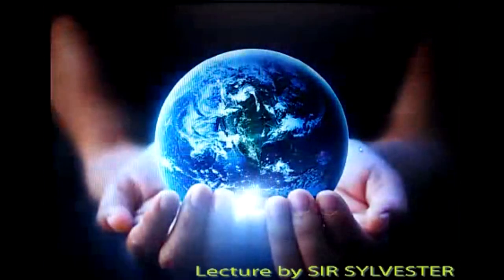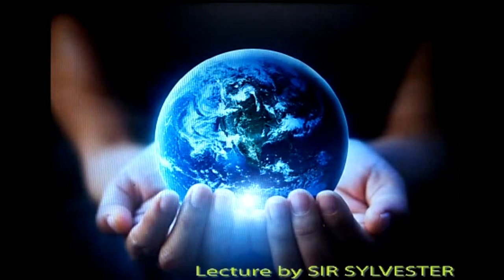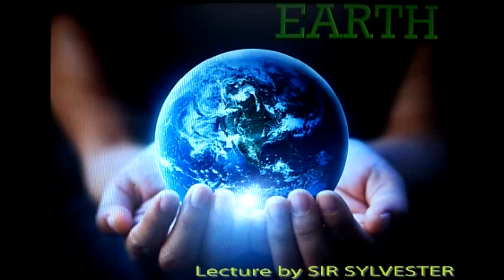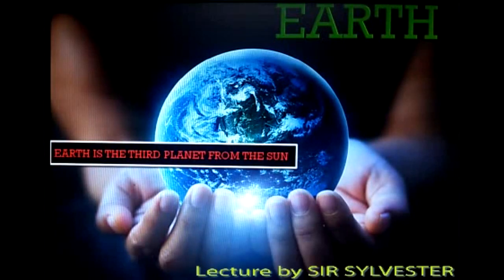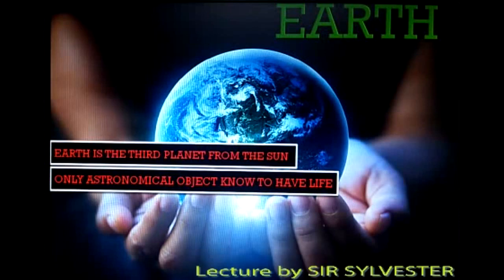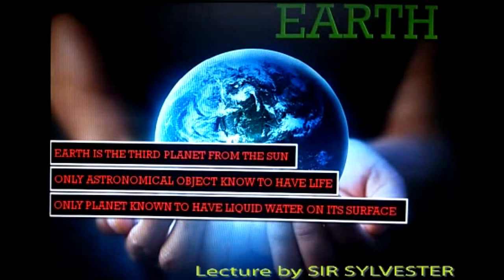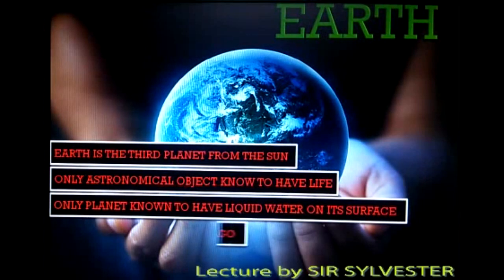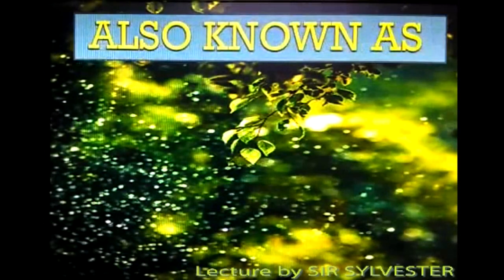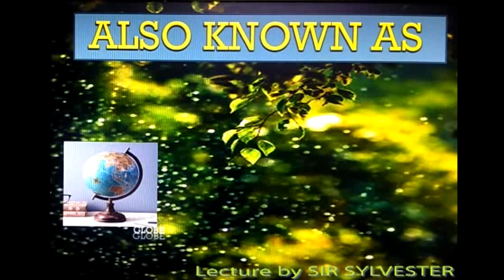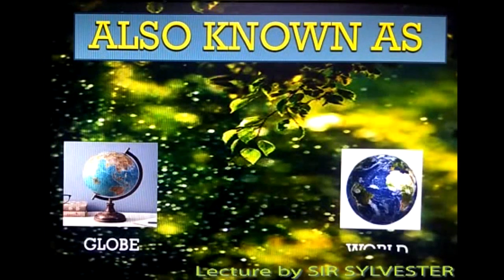Let's come to our planet Earth. Earth is the third planet from the Sun. It is also the only astronomical object known to have life, and the only planet known to have liquid water on its surface. It was formed about 4.5 billion years ago, so our planet Earth is quite very old. It is also known as the globe and referred to as the world.